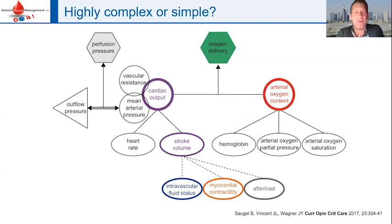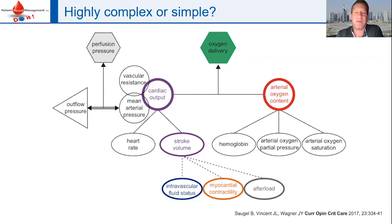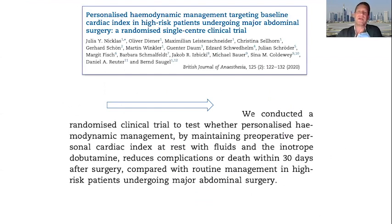Breaking it down to two important things: oxygen delivery — dependent on arterial oxygen content and hemoglobin — and perfusion pressure, dependent on cardiac output. These two concepts are in principle quite basic, but very often we are not monitoring them enough. I'd like to introduce a very nice paper published this year in the British Journal of Anaesthesia by Bernd Saugel from Hamburg — a randomized clinical trial all about personalized hemodynamic management.